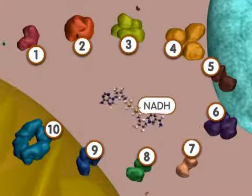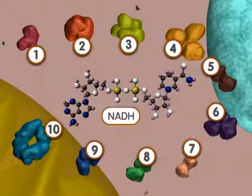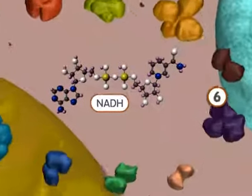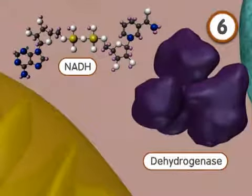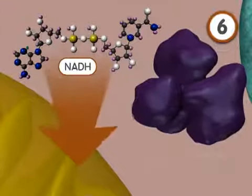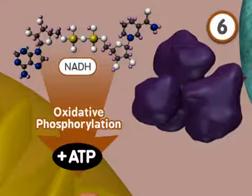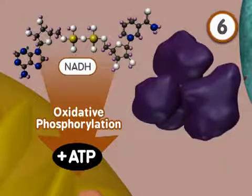There is one more key product of glycolysis to consider, called NADH. NADH is formed in the sixth reaction by an enzyme called a dehydrogenase. NADH is an electron carrier with the potential to produce more ATPs through a process called oxidative phosphorylation. Details of that process are shown in a separate animation.